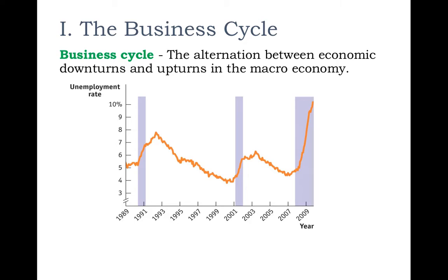The first thing we're going to talk about is the business cycle. Business cycles are the ups and downs of the economy through time — sometimes the economy is doing great, sometimes it's not so great. The business cycle measures the ups and downs that we see. Here you can see one indicator: the unemployment rate.